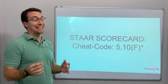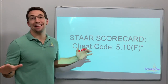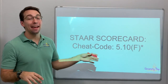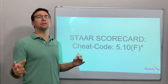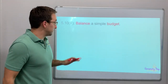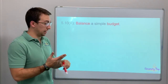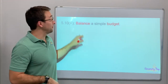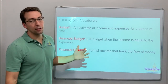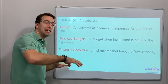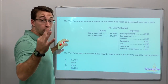Hey friends, this is the last video in the Star Scorecard series — cheat code 5.10 F. We're in 5.10, so we're talking about money. What do we do with money? We balance our budget. This is good for our nation, good for your home, your city, and for you personally. If everybody had a balanced budget, it would be awesome. We talked about all this vocab in 5.10 E, so we're going to take it easy and move through three problems.